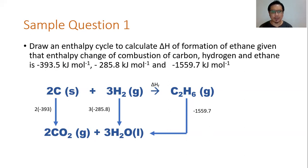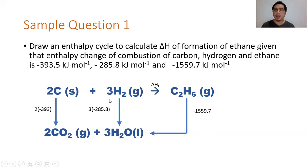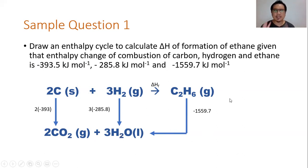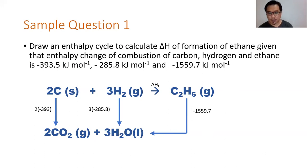Notice the ×2 for the enthalpy change of combustion of carbon, because there are two moles of carbon, and ×3 for the enthalpy change of combustion of H₂, because there are three moles of H₂. The enthalpy change of combustion of ethane is retained as is, because there is only one mole of ethane to combust. Bear in mind, state symbols are required — make sure all state symbols are indicated within your cycle. The cycle is now complete based on the supporting information given.